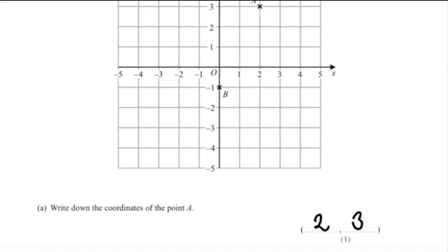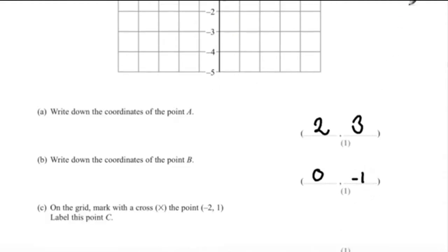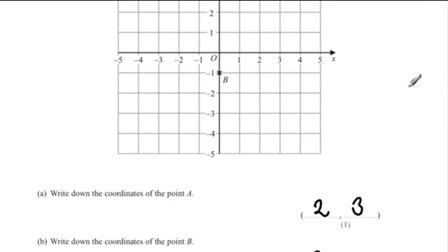Question 8B: write down the coordinates of point B. Point B is at (0, −1). Part C: on the grid, mark with a cross the point (−2, 1) and label it point C. Minus 2 is on the x-axis and 1 on the y-axis, so this is point C.